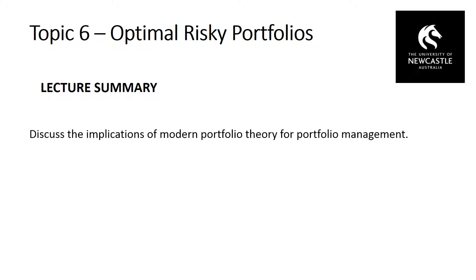We can do that by going back to first principles. When we look at the risk of an asset — for example, the risk of a stock price, which is its variance — that can be decomposed into two components: its systematic risk, which is the variability due to co-movement with aggregate market returns, and its unsystematic or firm-specific risk, which is the variability in the stock price due to firm-specific factors. Through diversification, we can reduce and potentially even eliminate that unsystematic or firm-specific aspect of risk.